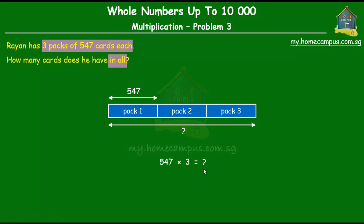Now, there are two ways that you can solve this question. You can either use addition or you can use multiplication. Since this lesson is on multiplication, we'll obviously use the multiplication way. Let's look at how to multiply 547 by 3.